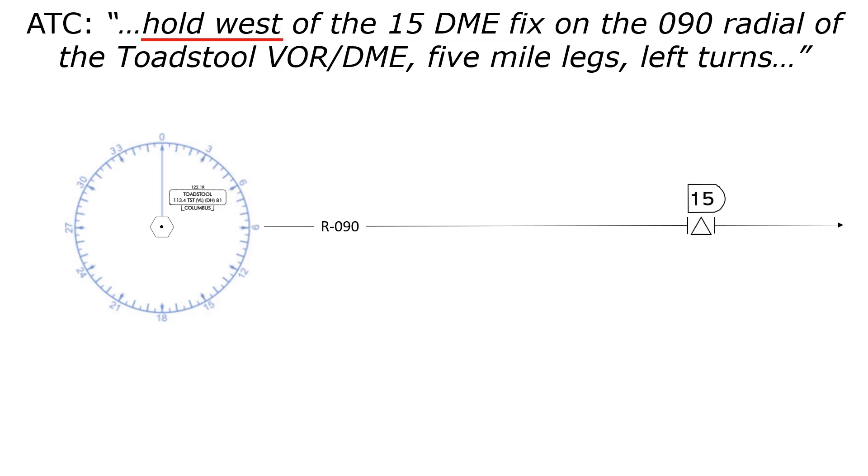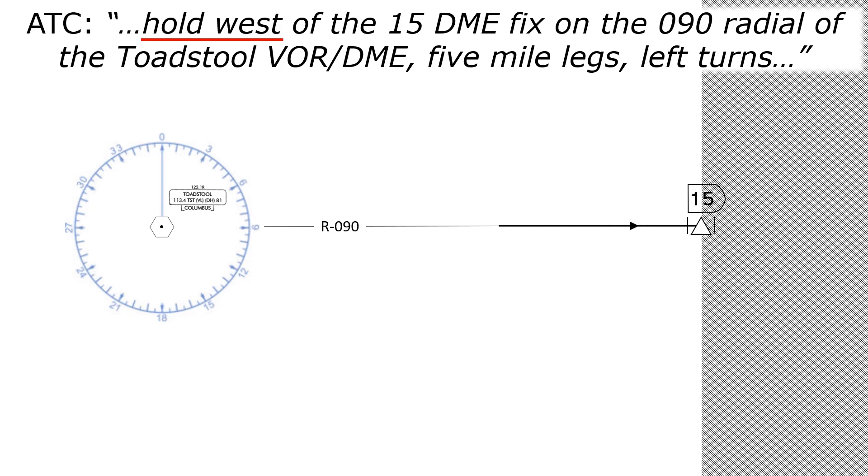The instruction is to hold west. That means that the holding pattern will be on the west side of the fix, not in the shaded area to the east. Next, let's draw the outbound turn. It's 180 degrees, and it's been specified as a left turn. The legs were instructed to be 5 miles, and then we draw the inbound turn to complete the cycle.